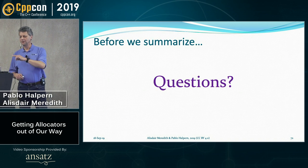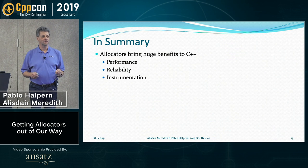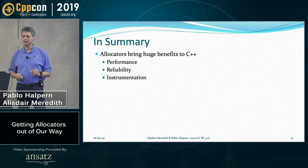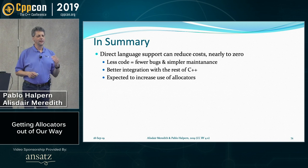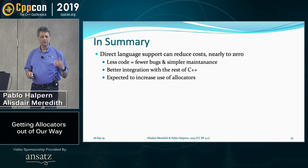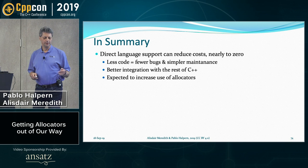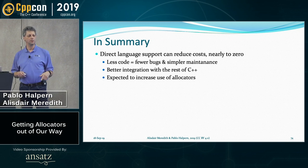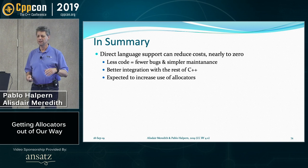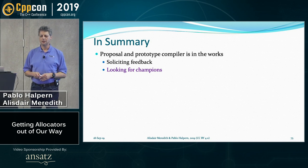We know that allocators are really good — they provide all these benefits in performance, instrumentation, and reliability, and they're easy to use even today so long as you're the end user and not the person implementing the allocator-aware class. The direct language support is trying to adjust that issue: generate less code by hand, fewer bugs, simpler maintenance, better integration with the rest of the language. By doing that, we hope that allocator-aware types will be more common and therefore allocator use will be easier in general. We have a proposal and a compiler in the works — we're looking for feedback and your undying devotion.